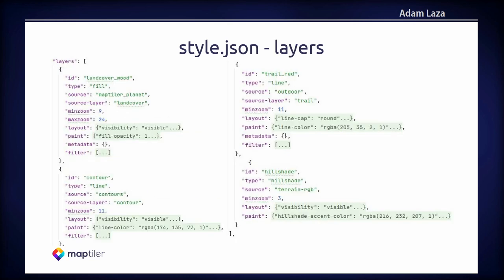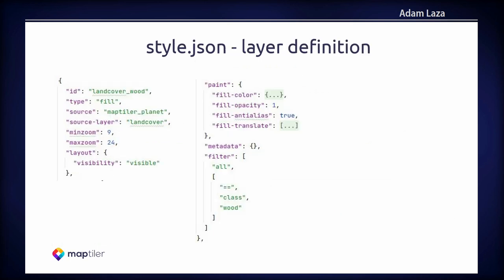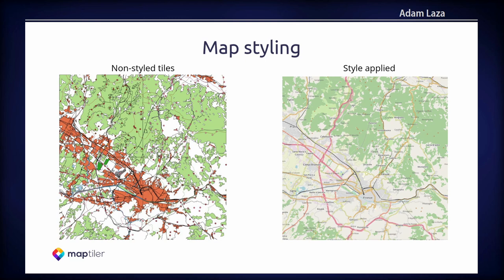This is how it looks at the layer definition. You can see there is the property paint, and that's what we read in the plugin. About the map styling — on the left side you can see the non-styled tiles, and on the right side you can see how the same tiles look when you give them a style. You can see the difference is quite huge, and on the right side it's our OpenStreetMap style.